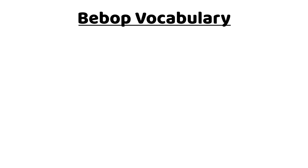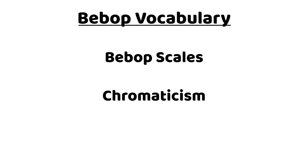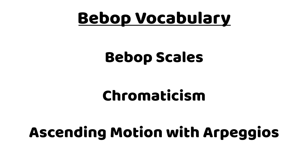The session is going to be covering how to develop bebop vocabulary. We're going to be taking a look at things like bebop scales, which are a really big part of my playing, as well as how to use chromaticism in your lines, and how to generate ascending motion using arpeggios. In this video, we're going to be taking a look at three quick tips for improving your bebop vocabulary.